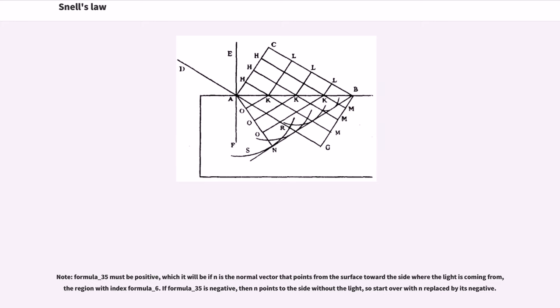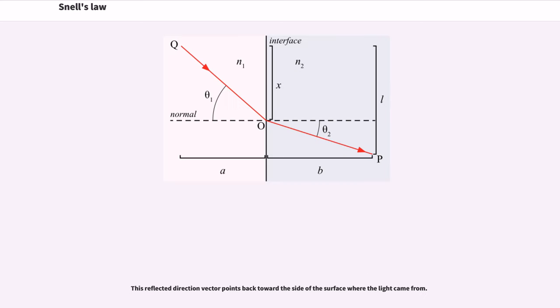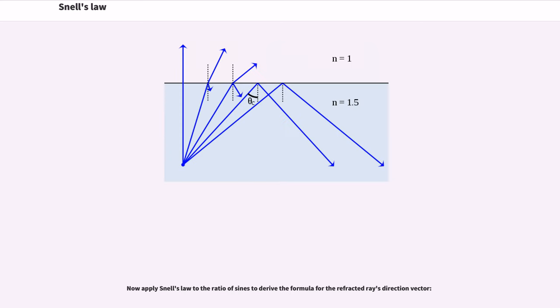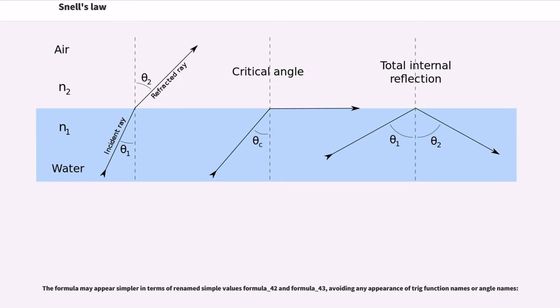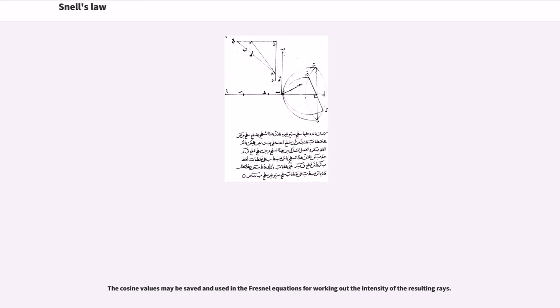If this reflected direction vector points back toward the side of the surface where the light came from, now apply Snell's law to the ratio of sines to derive the formula for the refracted ray's direction vector. The formula may appear simpler in terms of renamed simple values formula underscore 42 and formula underscore 43, avoiding any appearance of trigonometric function names or angle names. For example, the cosine values may be saved and used in the Fresnel equations for working out the intensity of the resulting rays.